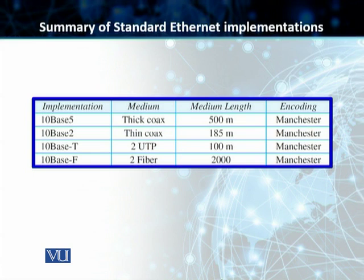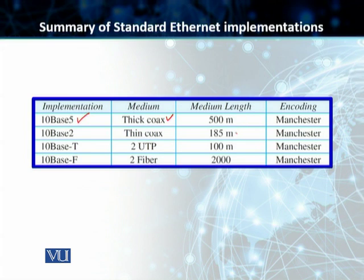We've got a summary of the standard Ethernet implementations. The first implementation is called 10Base5. The integer 10 represents the data rate, and we'll explain what 'Base5' means shortly. The transmission medium it uses is thick coaxial cable, with a maximum length of 500 meters, and the physical layer encoding used is Manchester encoding.